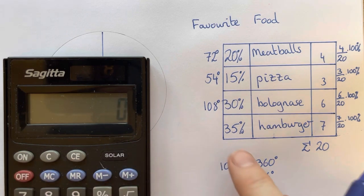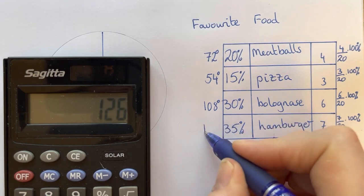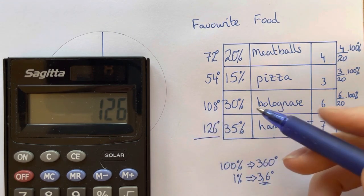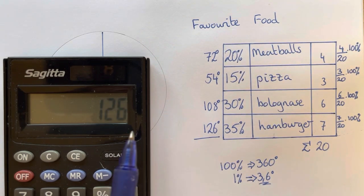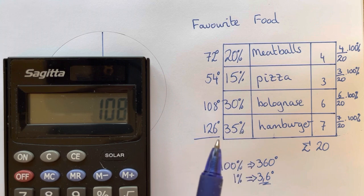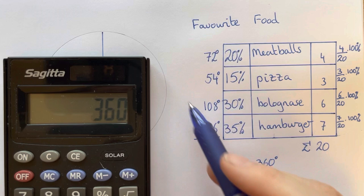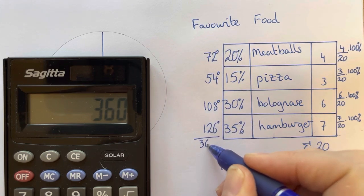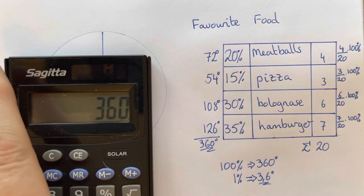And our final one would be 3.6 times 35 which would give us 126 degrees. And if we've done everything right here, 126 plus 108 plus 54 plus 72 will give us 360 degrees, which is a full circle, and so we can always check before we actually start writing it.